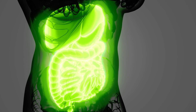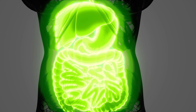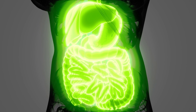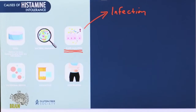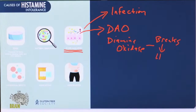One of the things that causes GI inflammation is a gut infection — a parasitic, bacterial, or viral infection within the GI tract. That can lead to GI inflammation, and the reason that matters is there's an enzyme predominantly expressed in your gut called DAO, which stands for diamine oxidase. This enzyme breaks down histamine, and when you have gut inflammation, that inflammation damages your body's ability to express this enzyme.